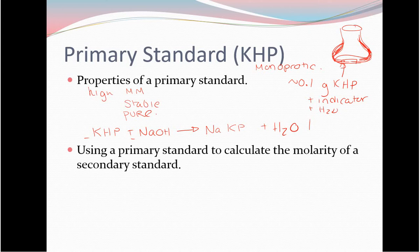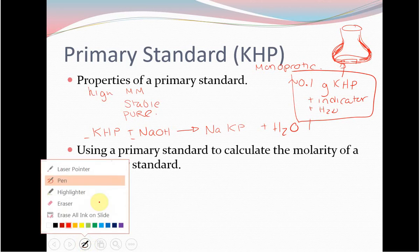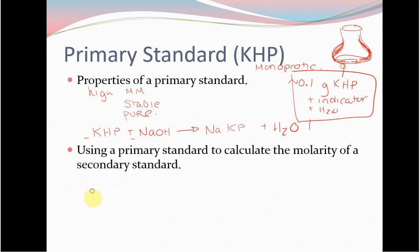Swirl gently to dissolve the KHP. The biggest thing people mess up — and it happens every semester — is forgetting the indicator. Do not forget the indicator. If you forget it, there's no point. The indicator is what tells you you're done titrating.